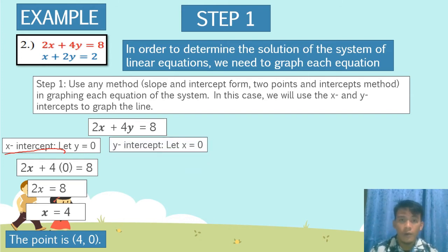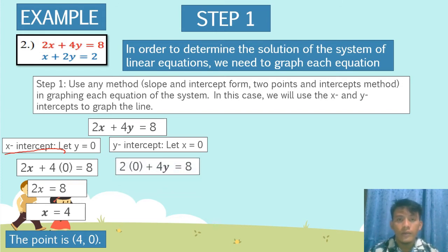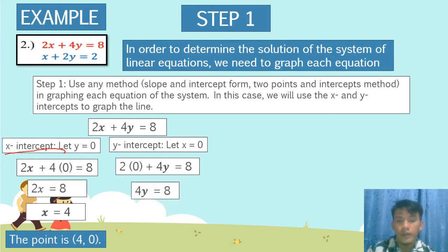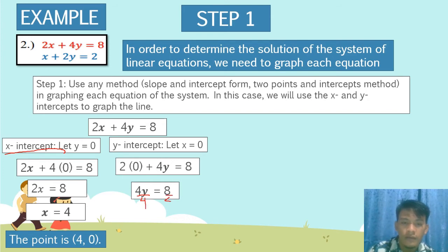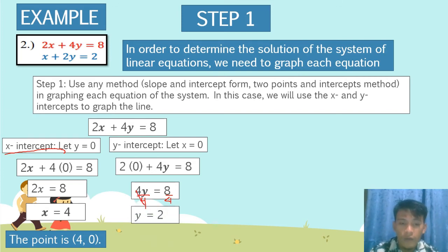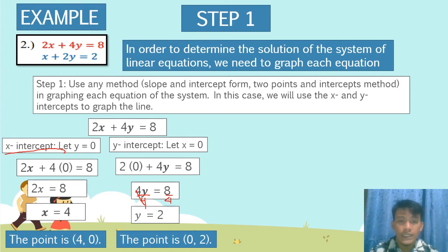To get the y-intercept of equation 1, let x equal to 0. Substituting: 2 times 0 plus 4y equals 8. Simplifying, 4y equals 8. Dividing both sides by 4, y is equal to 2. The point is (0, 2).